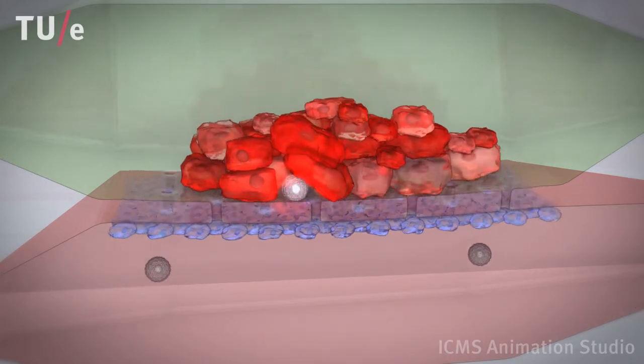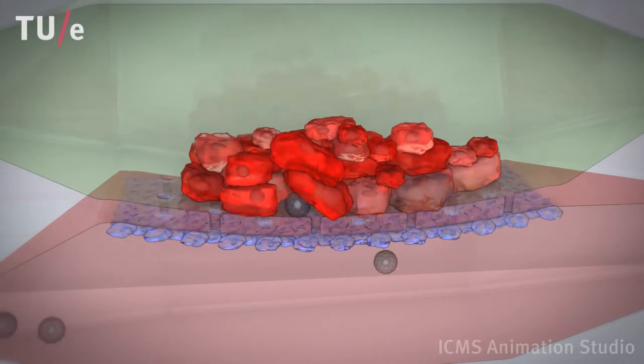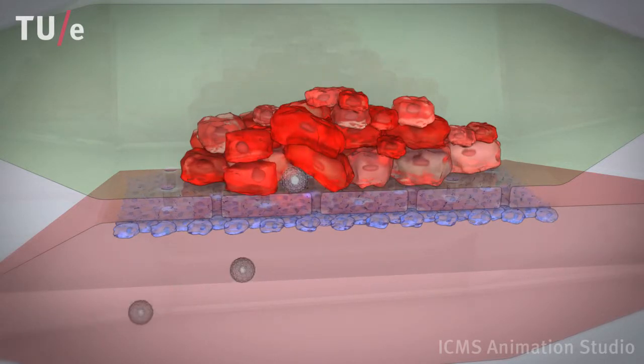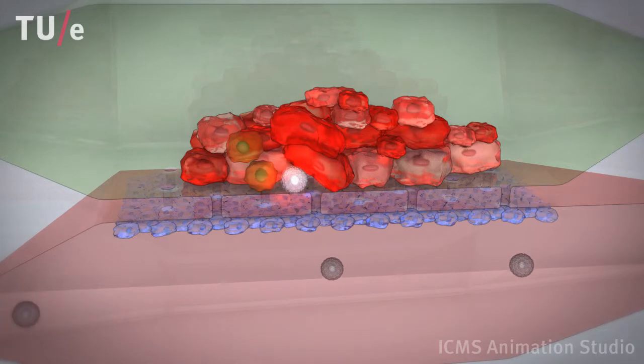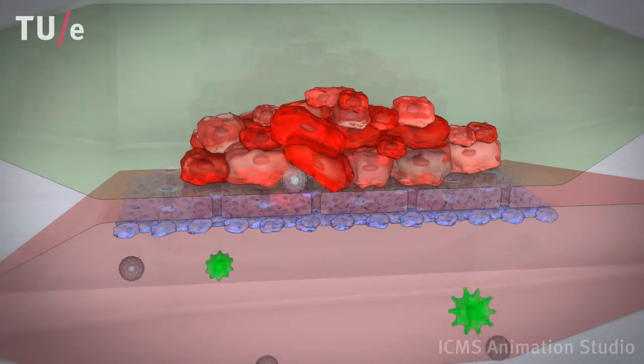Under the influence of immune cell signals and mechanical stresses, some cancer cells may change properties, become invasive, enter into the bloodstream and become circulating tumor cells.